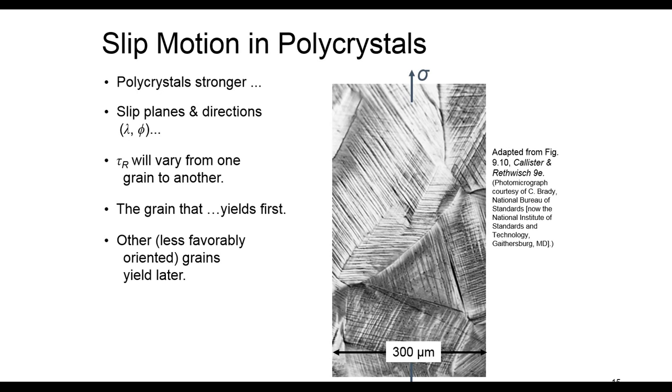Generally, in polycrystals, if you remember from previous chapters, we have different directions of growth of grains, so they meet at grain boundaries. So we have lots of grain boundaries. Actually, these grain boundaries are acting like barriers against the motion of dislocations.